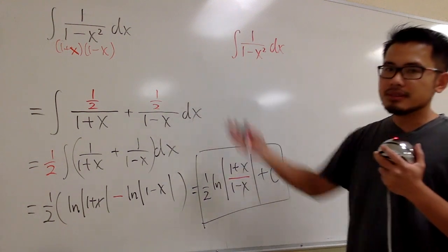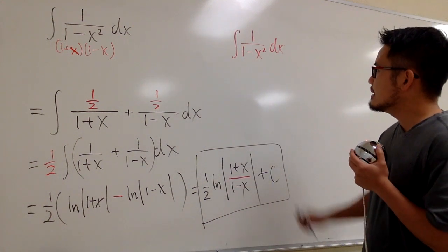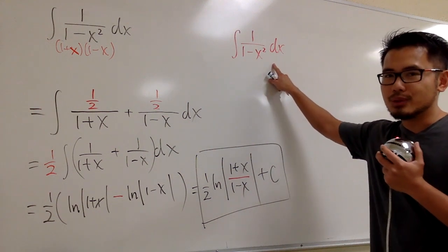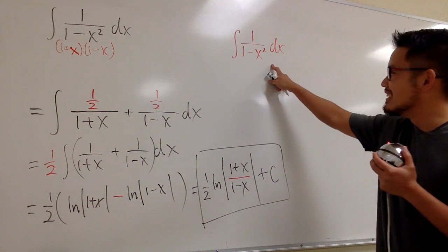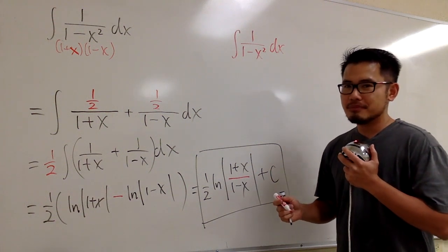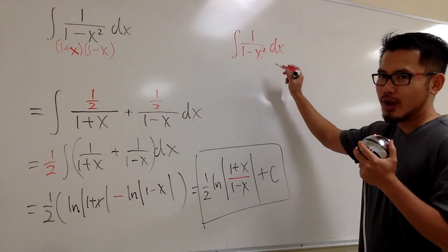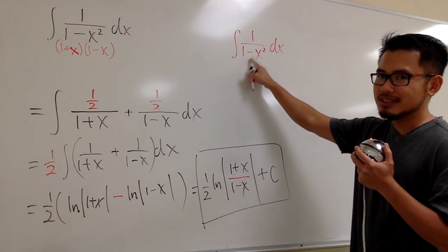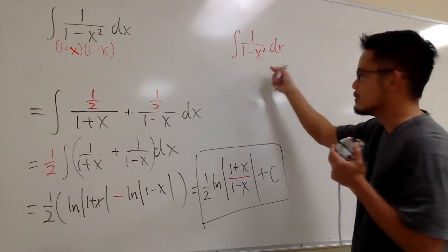And let me show you how we can do the same exact integral within one second. The integral of 1 over 1 minus x squared. Once again, notice that this is a minus, it's not a plus. But if this is a minus right here, which it is,